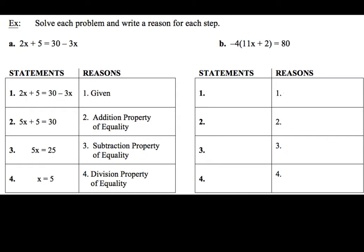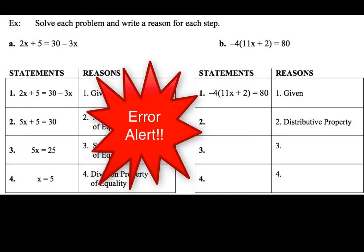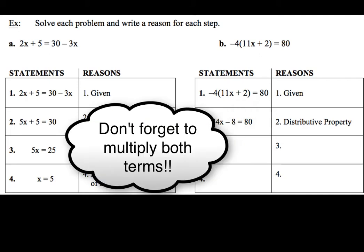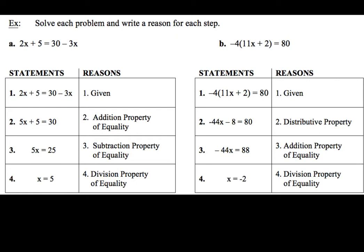Now let's go ahead and take a look at example B. Again, we're going to start out by writing our original equation, and the reason is going to be 'given.' I'm going to go ahead and start by using the distributive property. When you use the distributive property, you have to be really careful — big time error alert: a lot of times people will distribute the negative 4 to the first term and forget to distribute it to the second term. So make sure you use the distributive property appropriately, and you'll come up with negative 4x minus 8 equals 80. Then I'm going to add 8 to both sides using the addition property of equality, ending up with negative 4x equals 88. And lastly, we use the division property of equality to come up with x equals negative 2.